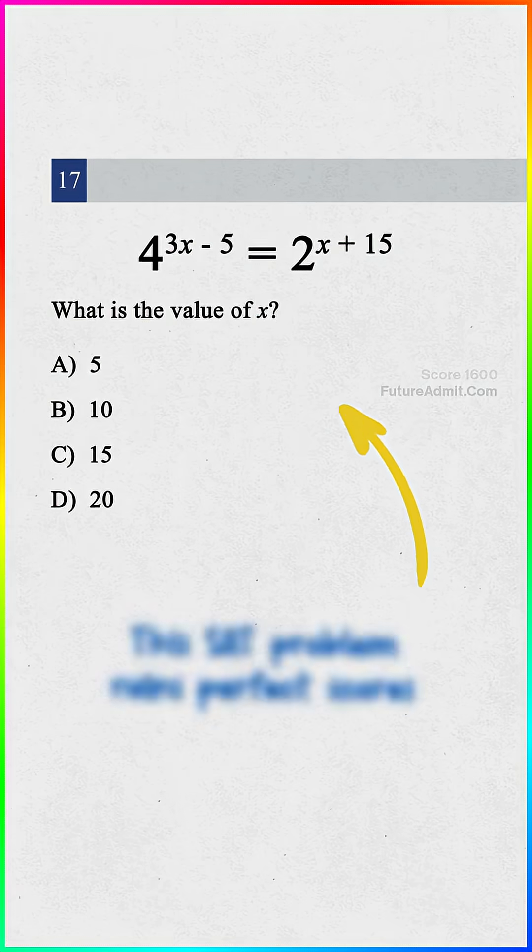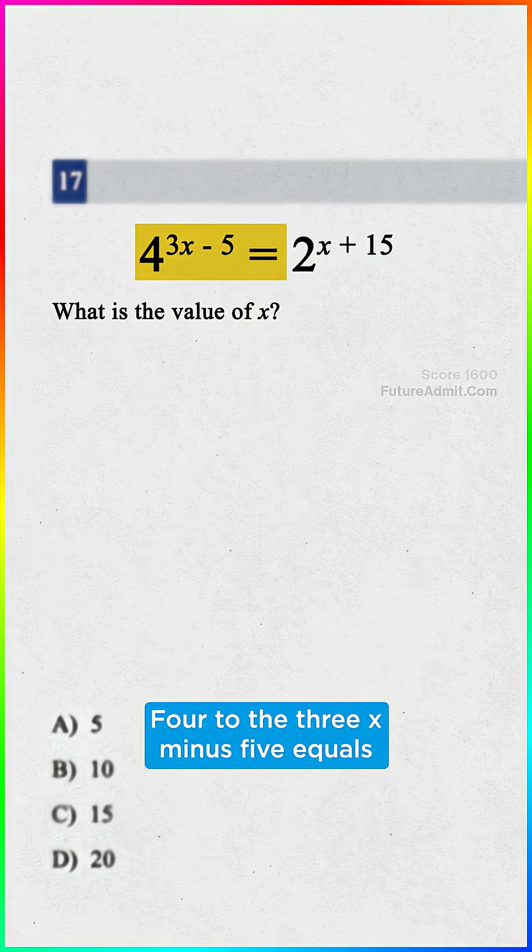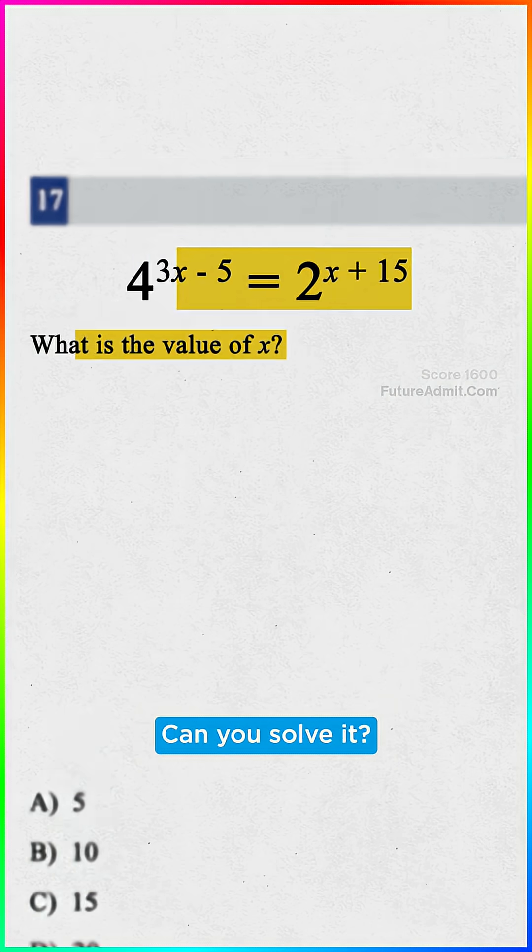This SAT problem ruins perfect scores. 4 to the 3x minus 5 equals 2 to the x plus 15. What's x? Can you solve it?